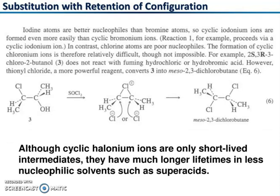Substitution proceeds with retention of configurations. Iodine atoms are better nucleophiles than bromine atoms, so cyclic iodonium ions are formed even more easily than cyclic bromonium ions. Reaction 1, for example, proceeds by a cyclic iodonium ion. In contrast, chlorine atoms are poor nucleophiles. The formation of cyclic chloronium ion is therefore relatively difficult, though not impossible. For example, 2S,3R-3-chlorobutanol does not react with fuming hydrochloric acid. However, thionyl chloride, a more powerful reagent, converts this compound into meso-2,3-dichlorobutane.